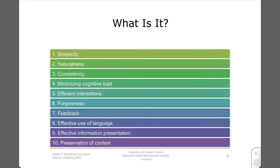HIMSS has clarified ten aspects of usability: simplicity, naturalness, consistency, minimizing cognitive load, efficient interactions, forgiveness, feedback, effective use of language, effective information presentation, and preservation of context. We will discuss each of these with examples. More information can be found at the URL in the notes for this slide.